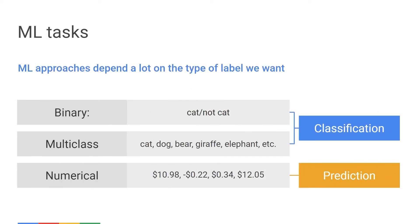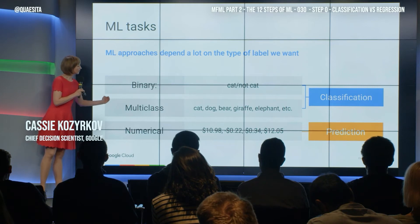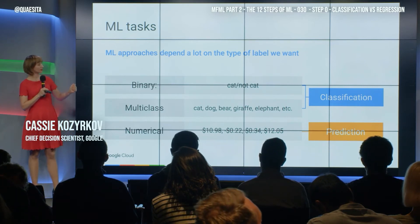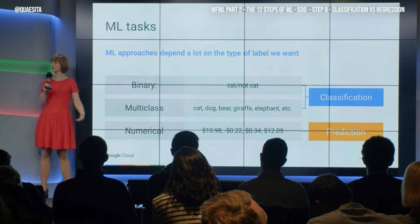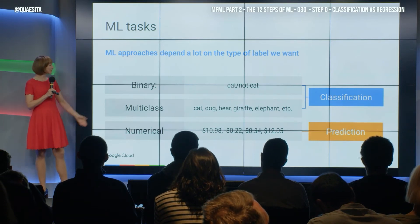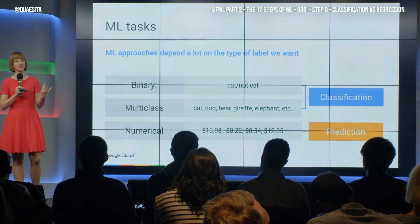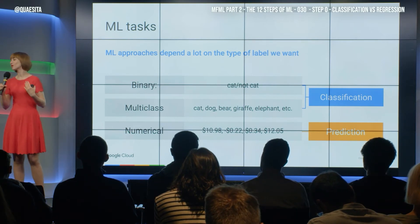The sort of label that you want is going to determine what kind of machine learning system you're looking for, so let's learn about some machine learning jargon to do with labels. If we are looking at binary or multi-class labels — things like cat/not cat, or cat, dog, bear, giraffe, elephant, etc. — then we call that a classification task. If the label is a number, we refer to that as a prediction task or a regression task.